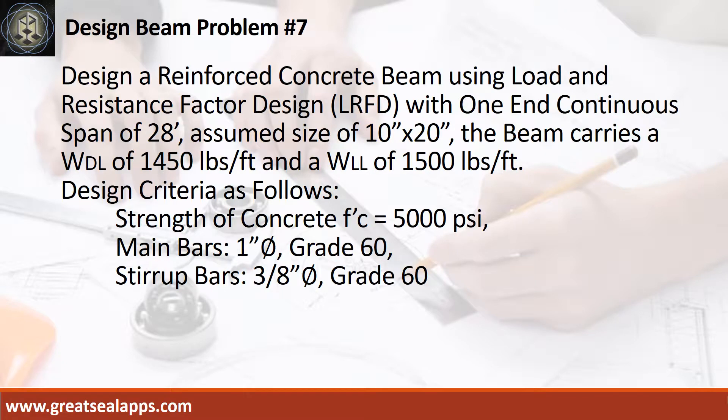Design a reinforced concrete beam using load and resistance factor design with one end continuous span of 28 feet, assumed size of 10 inches by 20 inches. The beam carries a uniform dead load of 1,450 pounds per foot and a uniform live load of 1,500 pounds per foot. Design criteria as follows.